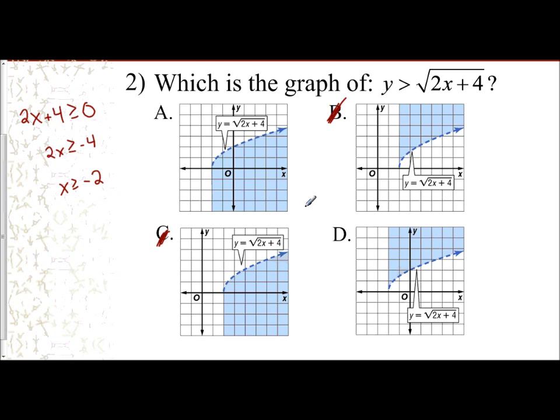So now let's look at the difference between a and d. They both start at negative 2. They're both dashed. It's just the shading. So if I take a look, well, hey, 0, 0 is a good test point here. So let's use it. So I'm going to use the test point 0, 0.